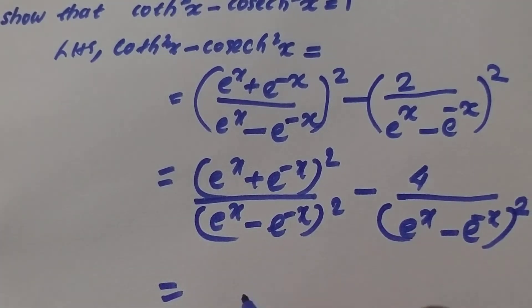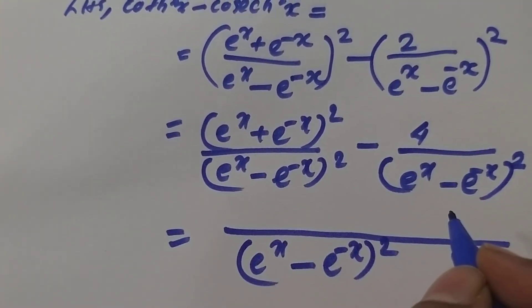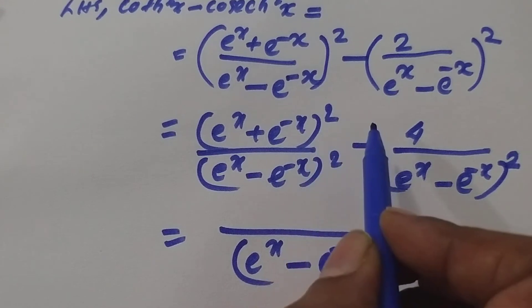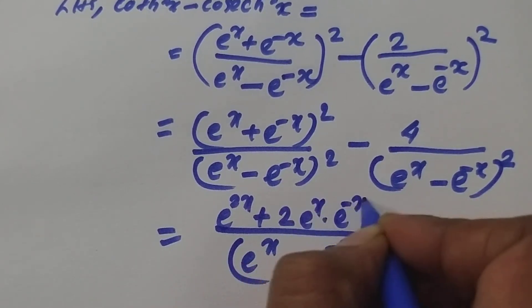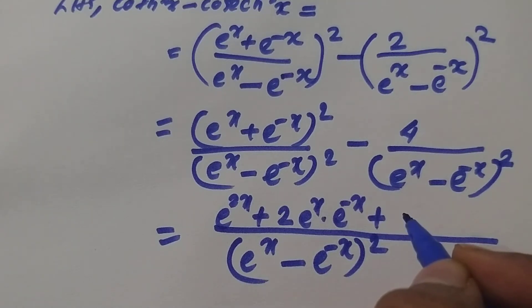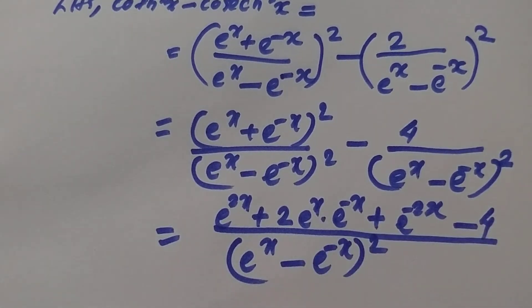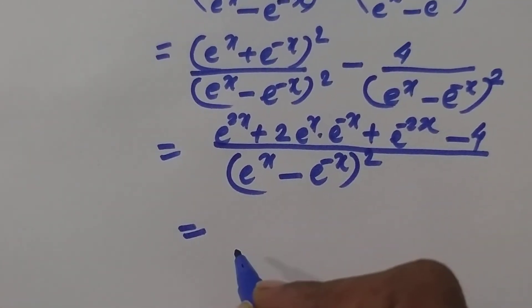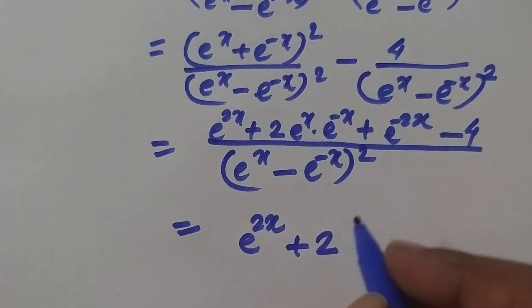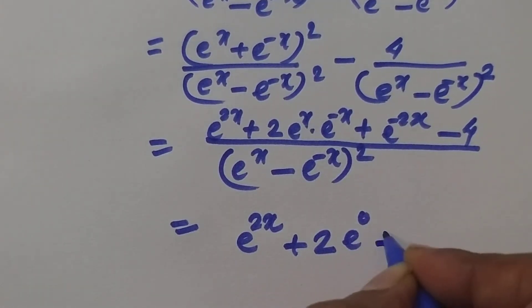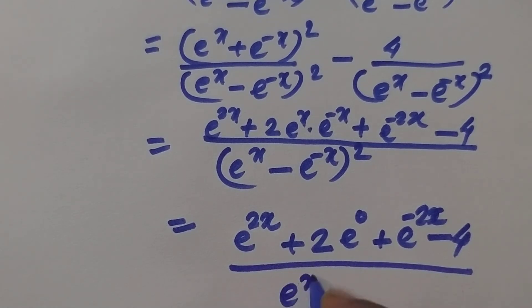The denominators are the same, so we combine over (e^x - e^(-x))². For the numerator, expanding (a + b)² = a² + 2ab + b², we get e^(2x) plus 2·e^x·e^(-x) plus e^(-2x), minus 4. Since e^x · e^(-x) = e^0, the middle term becomes 2.